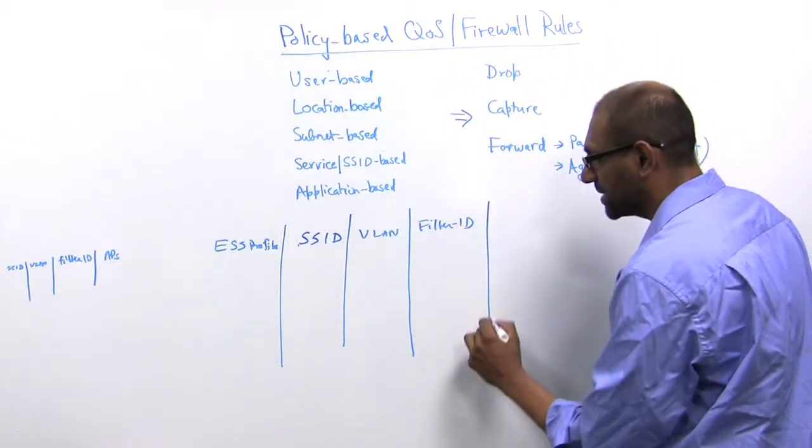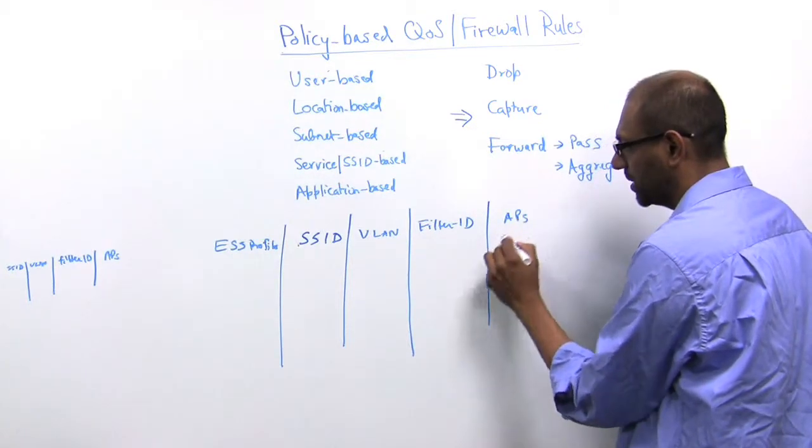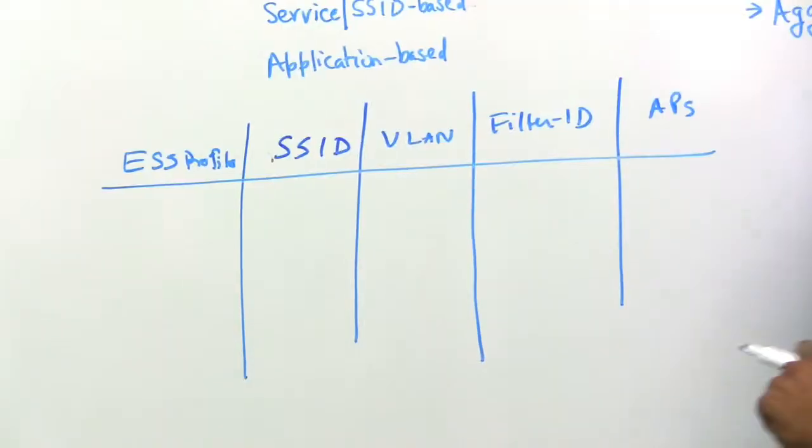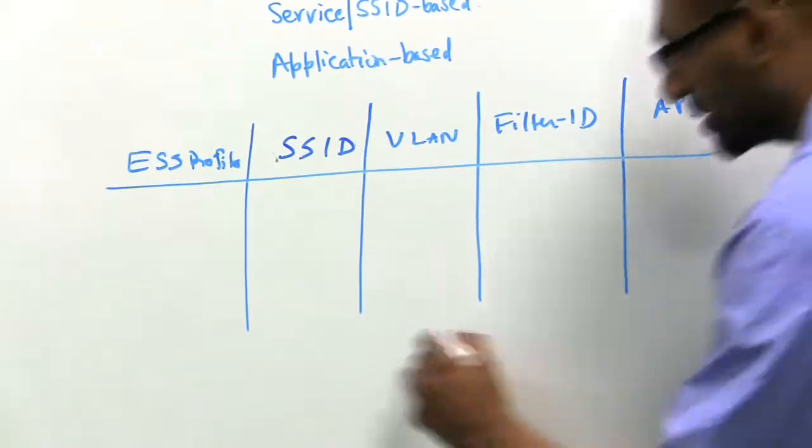And you can map SSIDs or an ESS profile to some number of access points. So this is a list of access points. The purpose or the relevance of these fields is going to become apparent in a few minutes.